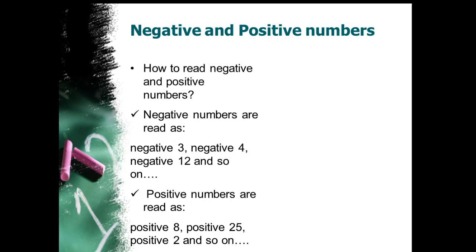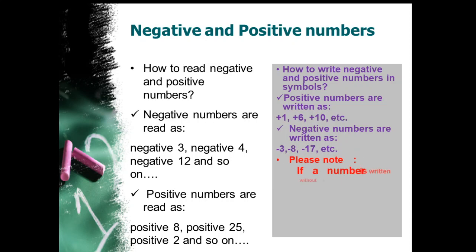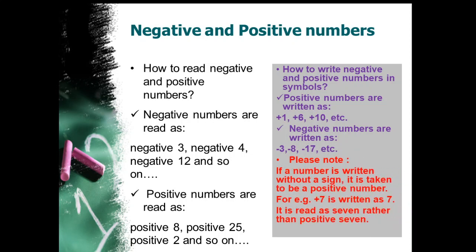How do we write negative and positive numbers using symbols? Positive numbers are written as plus 1, plus 6, plus 5, plus 10, plus 15, and so on. Negative numbers are written as minus 3, minus 8, minus 100, and so on. If a number is written without a sign — as we saw on the number line, numbers on the right side after 0 were just written as 1, 2, 3, 4 — those numbers with or without a symbol are taken as positive. For example, plus 7 can also be written as just 7, because it is understood to be positive.